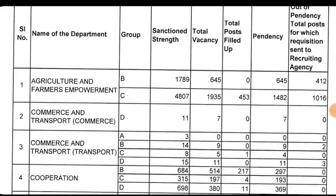This is the department and the post details. The Agriculture and Farmers Environment Department has Group D, with 412 vacancies.